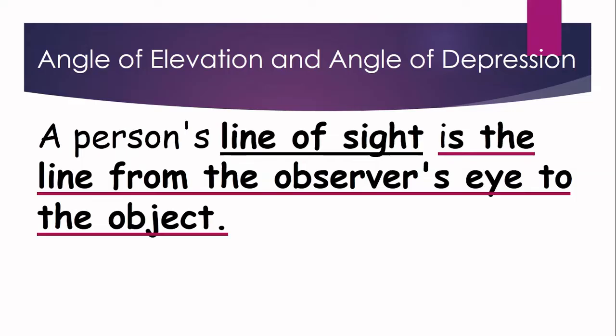Before defining what is angle of elevation and angle of depression, let us know first what we mean by line of sight. A person's line of sight is an imaginary line from the eye of the observer to the object being observed.